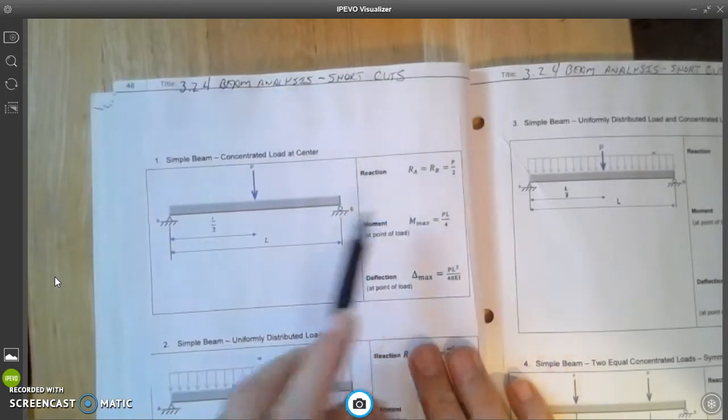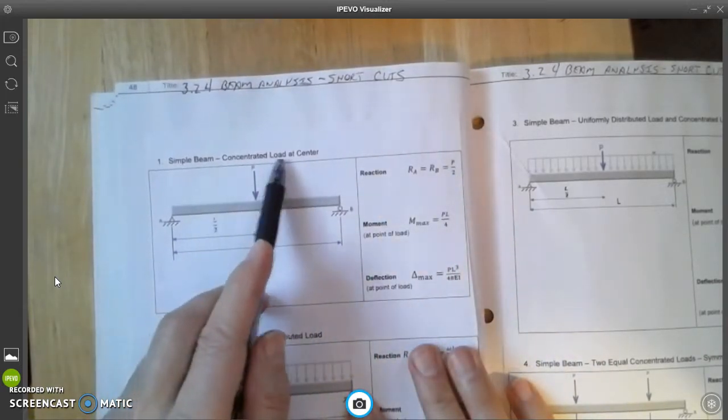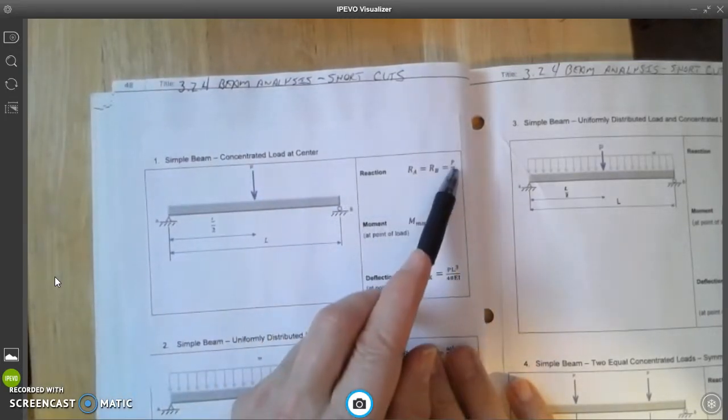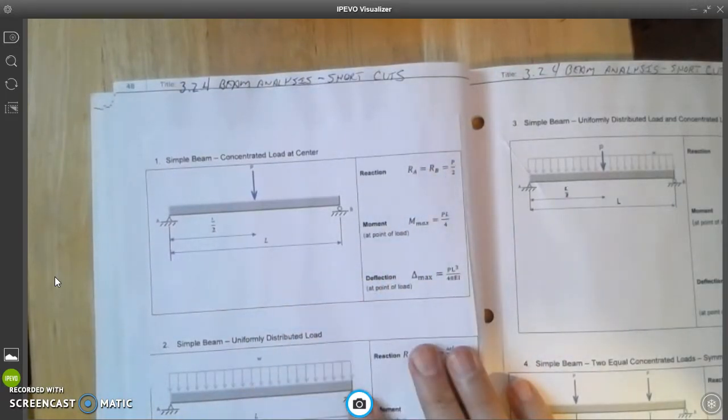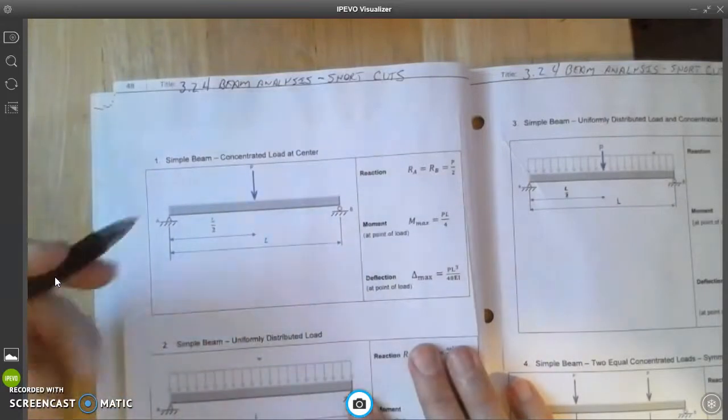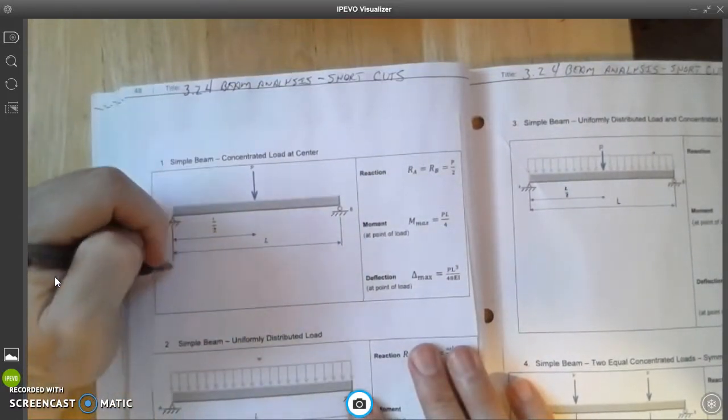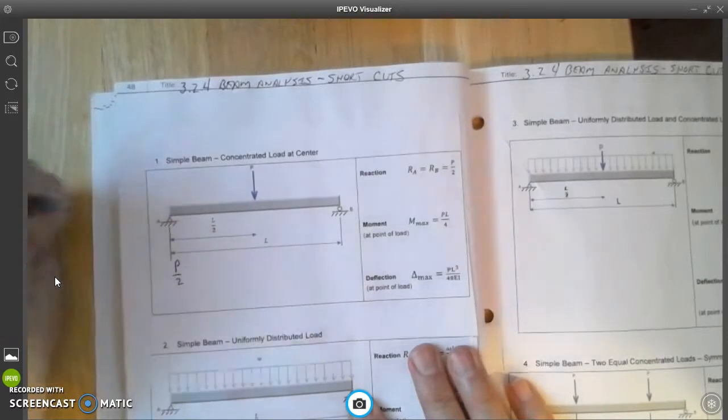So for a concentrated load at the center of a simple beam, the reaction is going to be the p-value divided by 2. Here's what I'm going to do - I'm going to actually do the calculation over here, so it's going to be p divided by 2.